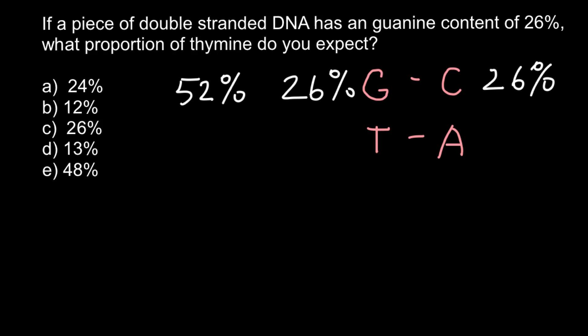24% would be made by thymine and 24% would be made by adenine. So if we know that guanine makes 26%, our answer would be that thymine would make 24%.